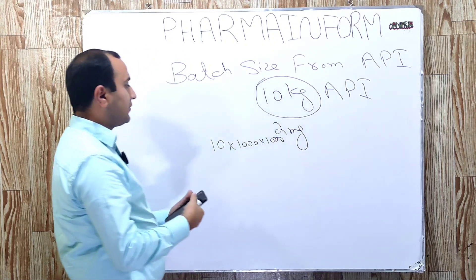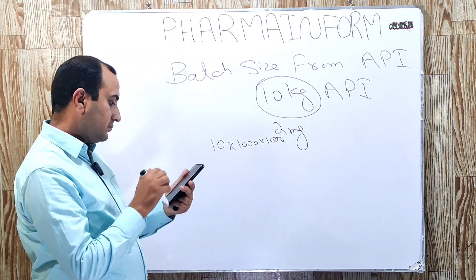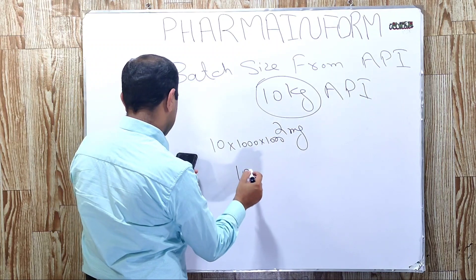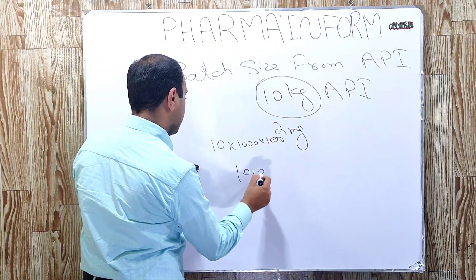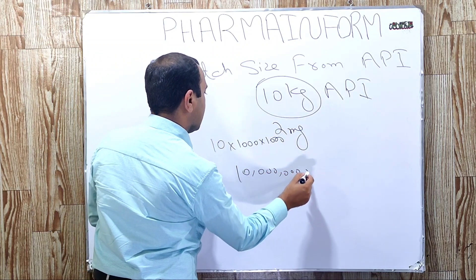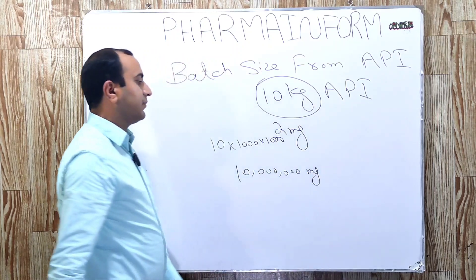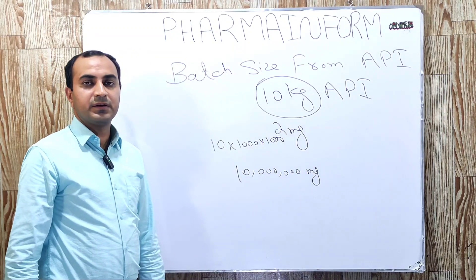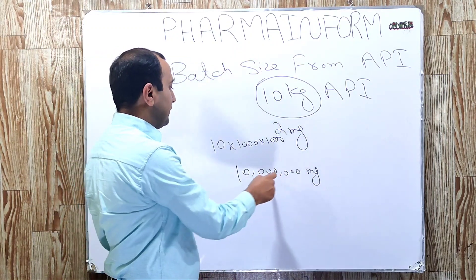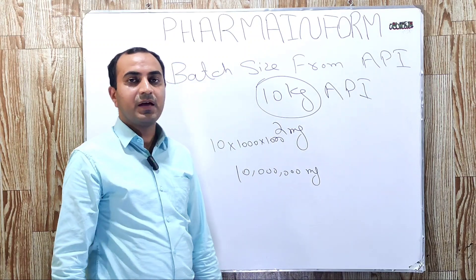The answer will be 10,000,000 milligrams. So the active pharmaceutical ingredient total quantity in milligrams is 10,000,000 mg.